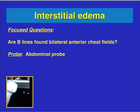For interstitial edema, what are your focus questions? Your first focus question is: are B lines found in the bilateral anterior chest fields? Your second focus question is: is lung sliding present or absent? The probe that you use is either the abdominal probe or the cardiac probe with the abdomen preset. It's usually easiest to see the B lines with the abdomen preset, but the newer machines now actually have lung presets, so that's also important for you to be able to use.